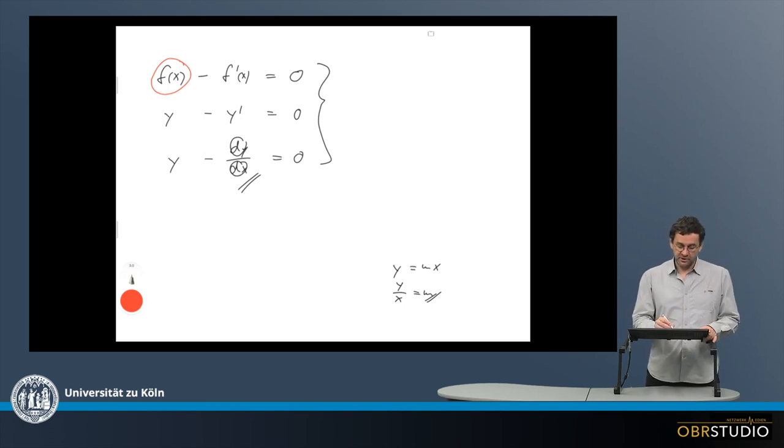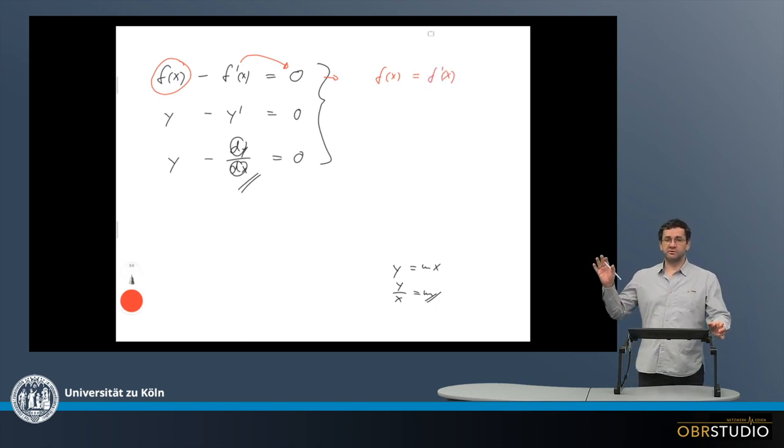And to do this, we can rearrange this equation. So we can put the f prime of x to the other side. And then the result is f of x equals f prime of x. So the derivative and the function are the same.